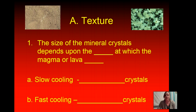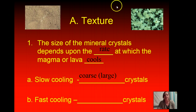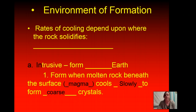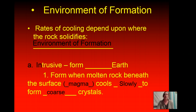The size of the mineral crystal will depend upon the rate at which the magma or lava cools. Slow cooling gives us those coarse or large crystals that we see in the top right corner. Fast cooling gives us fine or small crystals as seen in the left-hand picture. The environment of formation is very important — rates of cooling depend upon where the rock solidifies, which is known as the environment of formation.